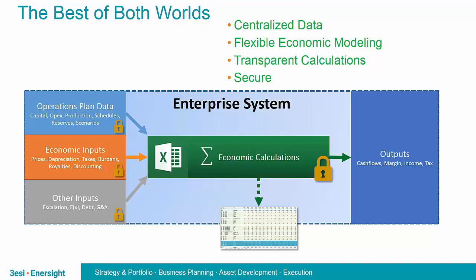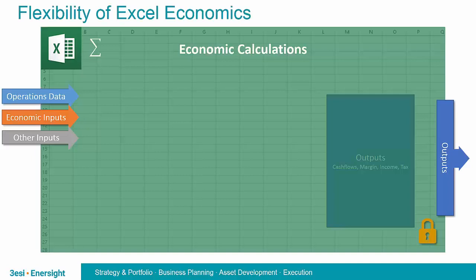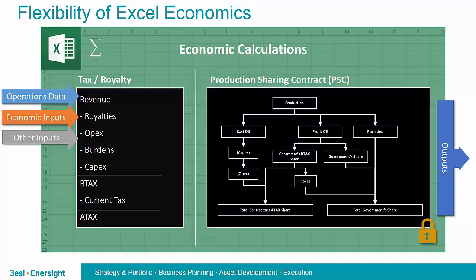Now, before we rush off and mash these two concepts together, we need to consider some important points. We need to recognize the types of models that will be created. The enterprise system will provide things like operations data, economic inputs, and other info into the spreadsheet model. The model itself may be something simple — a tax royalty structure that is somewhat linear in nature, although in Western Canada or in the U.S. these models are anything but simple. The spreadsheet may also be used to model more complex regimes like production-sharing contracts involving parallel-type calculations. In either case, the enterprise system needs to consume the outputs regardless of the structure, and the model itself will require security around it.